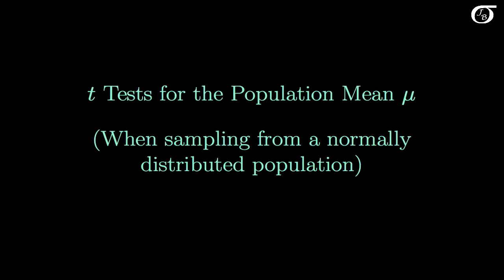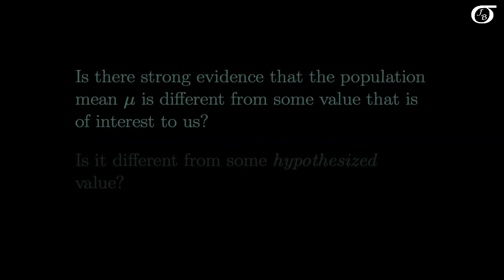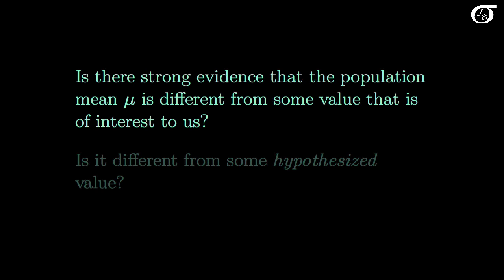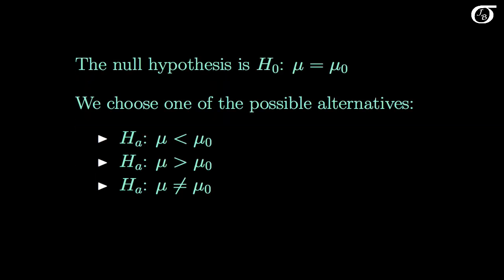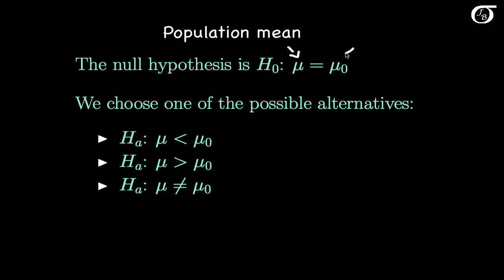Let's look into t-tests for the population mean mu. These tests will be appropriate when we are sampling from a normally distributed population. Is there strong evidence that the population mean mu is different from some hypothesized value? Here we'll be testing the null hypothesis that mu is equal to some hypothesized value mu0. The alternative hypothesis is that the null hypothesis is wrong in some way, and we're going to choose our alternative from one of these three possibilities.